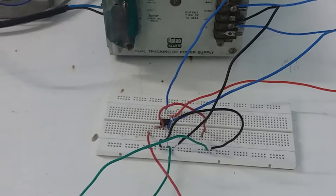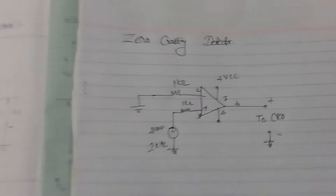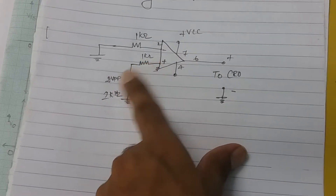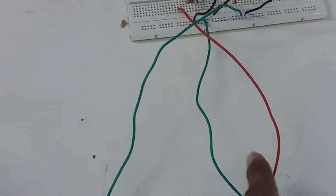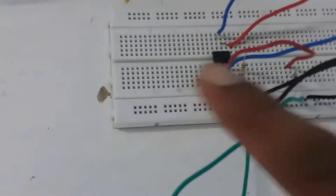This is similar for the Schmitt trigger as well as the zero crossing detector. For the positive amplifier, the source is connected to the positive terminal. For the negative amplifier, the source is connected to the negative terminal. The plus terminal is connected through the resistance to the sinusoidal input at pin number three, which is the input of the IC.